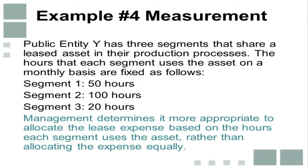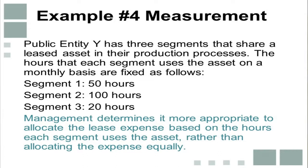Another measurement example is where public entity Y has three segments sharing a leased asset in their production processes, with each segment's usage fixed for the duration of the lease term — segment one uses the asset for 50 hours, segment two for 100 hours, and segment three for 20 hours per month. Management determines that allocating the lease expense based on the hours each segment uses the asset is most appropriate, as it better reflects how costs are incurred by each segment than allocating costs equally.